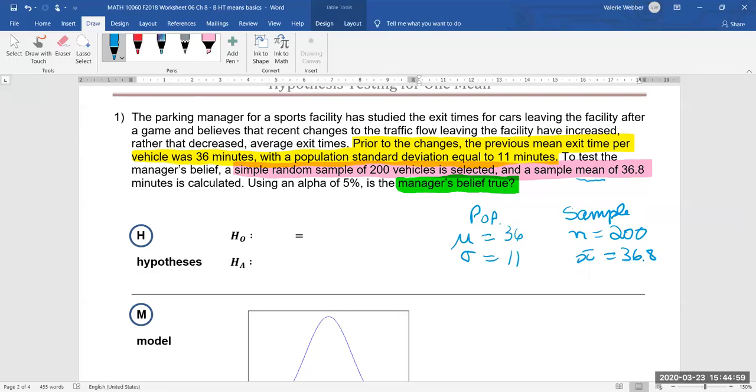So to formulate our null hypothesis what is existing what is currently accepted is that the mean exit times mu is 36 and what does the manager believe? So let's take a look at that again. So he believes that recent changes have increased average exit times. So here we're going to have mu is greater than 36. So now we have formulated we've deconstructed our question and we formulated our null and alternative hypotheses.